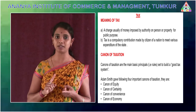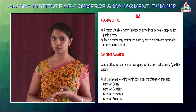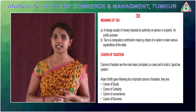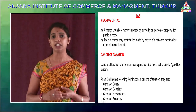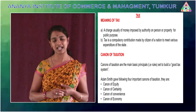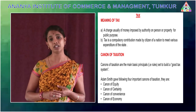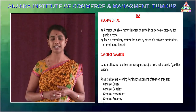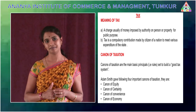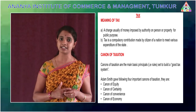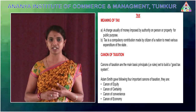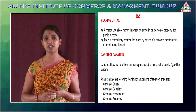The time and manner of payment of tax should be known to the taxpayer. The next canon is the canon of convenience. The mode and timing of payment of tax should be as convenient as possible to the taxpayer. For example, land revenue should be collected at the time of harvesting, and income tax is deducted at source. It should not become a burden to the taxpayer. This is the concept of convenience.